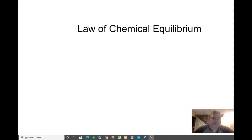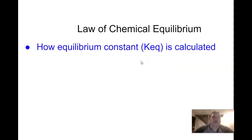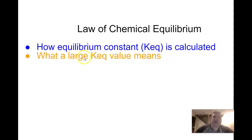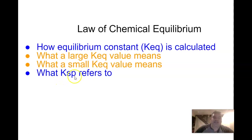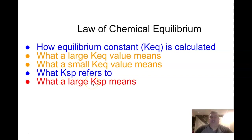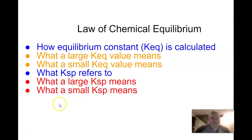Our goals for today: First, we're going to figure out how the equilibrium constant, represented by the symbol KEQ, is calculated — how do we come up with this KEQ number? Second, we're going to talk about what a large KEQ value means for our equilibrium, and what a small KEQ value means. Then later, we'll study a special version called KSP — what it refers to, and what a large or small KSP value means for a substance.